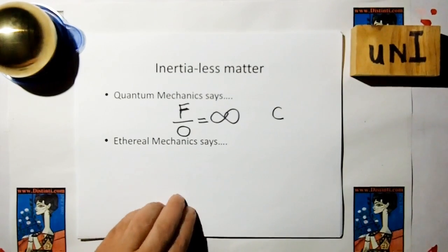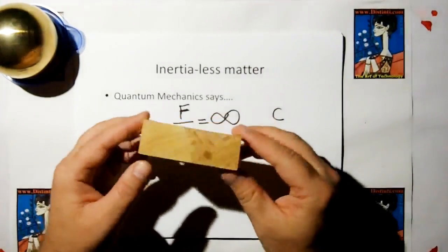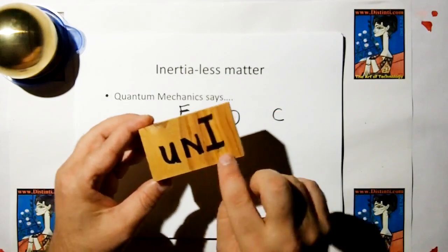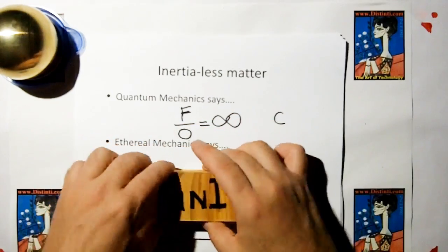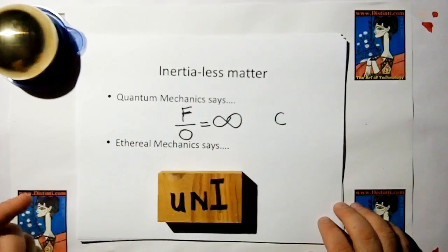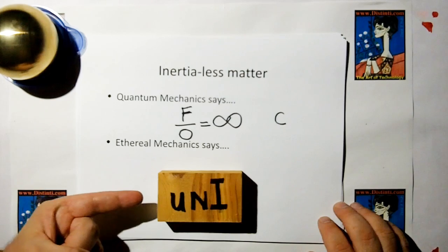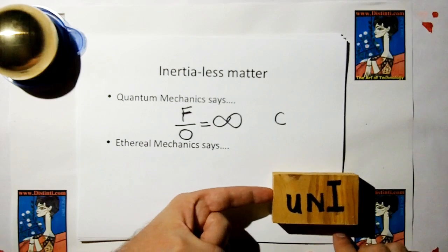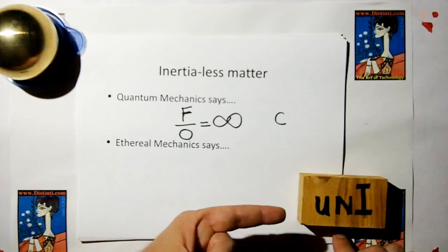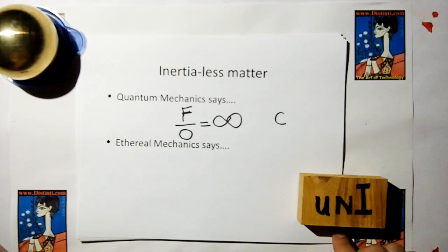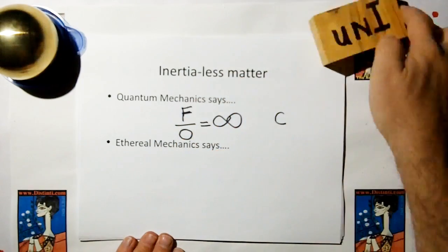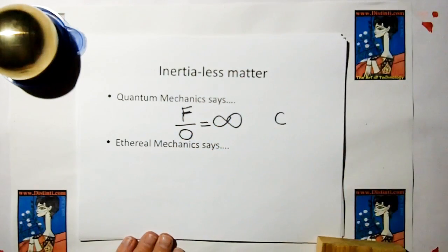What Ethereal Mechanics says is: consider this little block of wood here, a block of inertialist matter called un-inertium — I can't afford real un-inertium right now. If I try to apply a force to this block, it's going to move in front of my finger and I'm never going to feel it. I can't apply a force to it, and if I stop applying force, it's just going to stop, because it has no inertia and can't keep in motion. I will never feel it — it's just going to move out of my way, just like empty space moves out of my way.